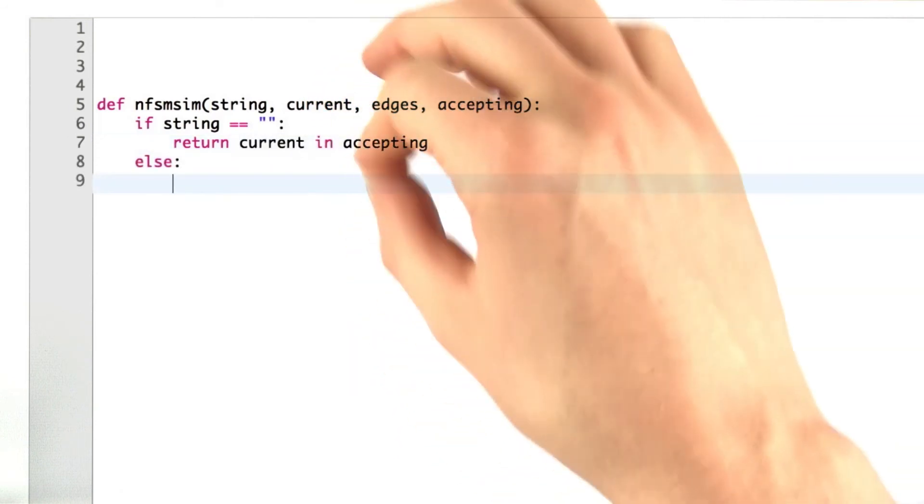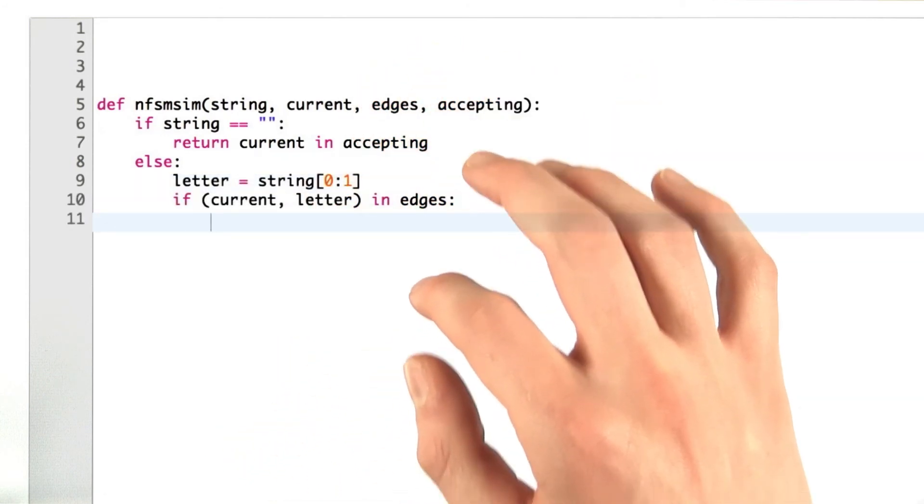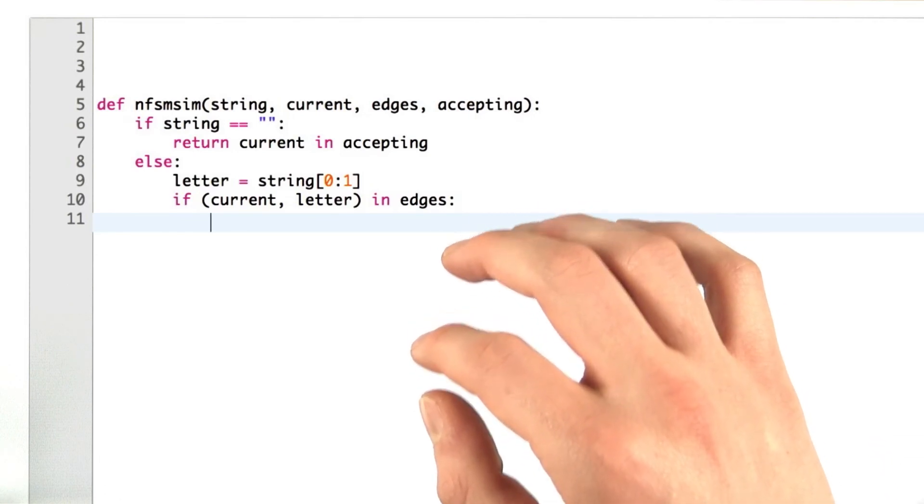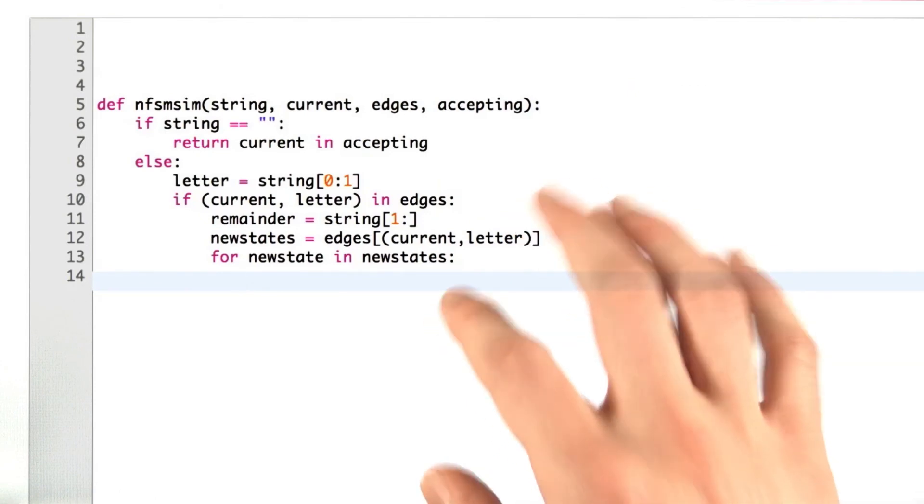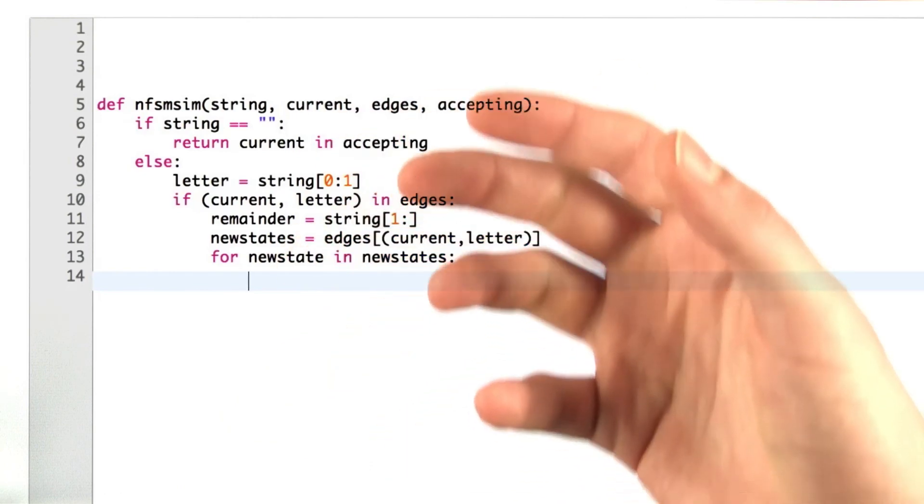Otherwise, we're going to look at the first character in our string. If the current state has an outgoing edge with the letter that's the first character in the string, we're going to do a recursive call for each edge. So here, I've written the code that gets out the new state. And the last thing we need to decide is what to do with what the recursive call returns.